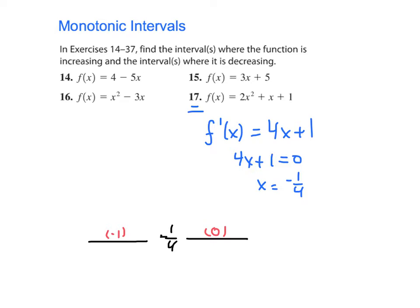So let's start with 0. If I plug 0 into my first derivative right here, I'm going to get 0 plus 1, which is positive 1. And since there are no other critical points anywhere to the right of negative 1 fourth, I know that that first derivative is always going to stay positive.